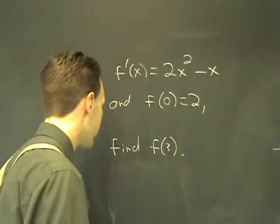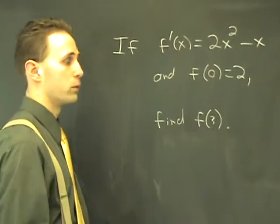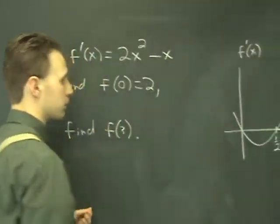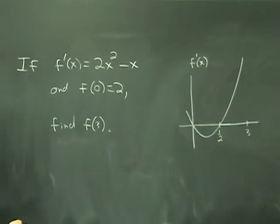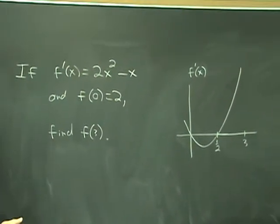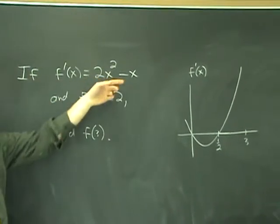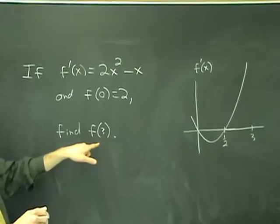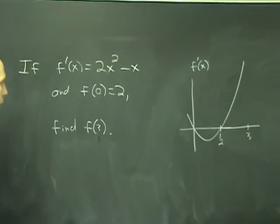The concept of integrating rates of change can be taken out of context and generalized to regular functions, just f of x with graphs and outside of the context of a word problem. One such example is this. They give you information about the derivative, f prime of x is this, and they tell you an initial value of f, and they want to know what f of 3 is.